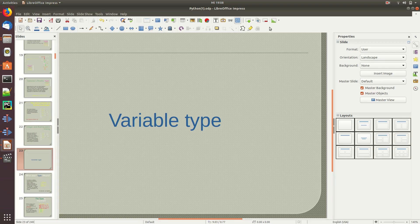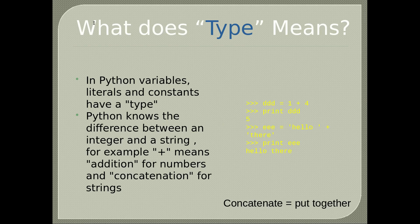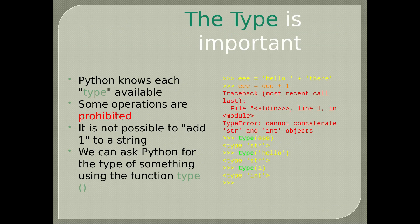What does type mean? In Python, variables, literals and constants have a type. Python knows the difference between an integer and a string. For example, plus means addition for numbers and concatenation for strings. If you type ddd = 1 + 4 and print ddd, you get 5. If you type eee = 'hello' + 'there' and print eee, it results in 'hello there'. Some operations are prohibited — it is not possible to add 1 to a string.